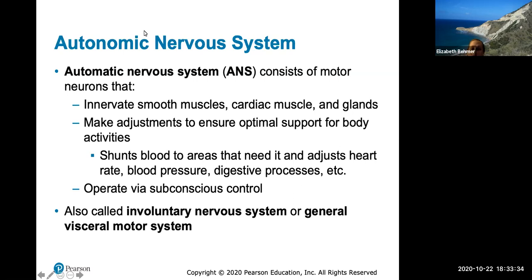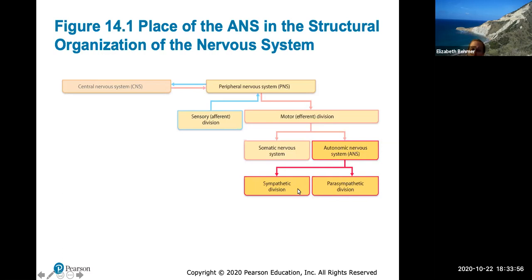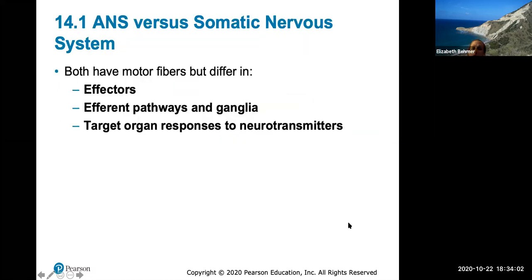In comparison to your somatic motor system, which controls all skeletal voluntary muscles, the autonomic nervous system controls anything subconsciously. We divide the ANS into the sympathetic and parasympathetic divisions. Most test questions — about 80 to 90 percent — focus on understanding the differences between these two. Both have motor fibers, but they differ in where their efferent pathways end and their target organ responses to neurotransmitters.